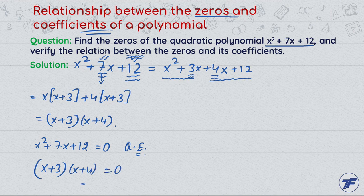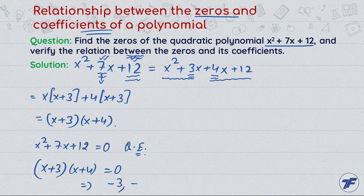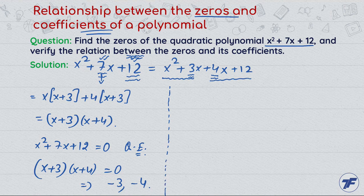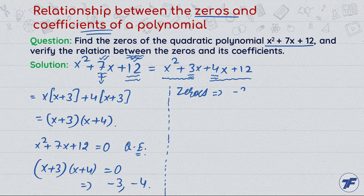So the zeros are -3 and -4. That means x = -3 and x = -4.